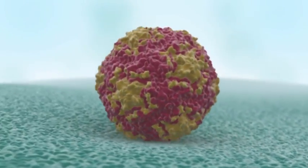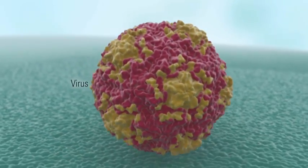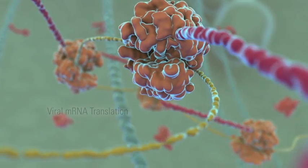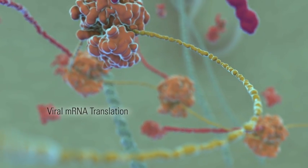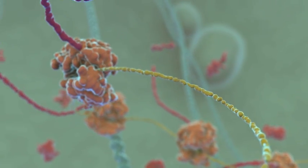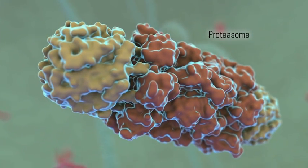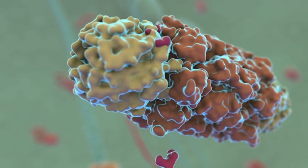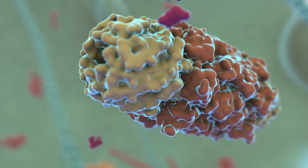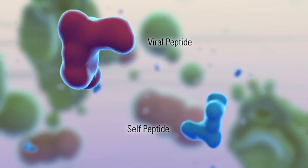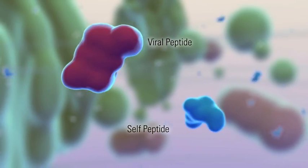Following infection, a virus takes advantage of the host cellular machinery to create proteins required for its propagation. Within the cytosol, host enzymes like the proteasome break down some of these viral proteins. The resulting viral peptide fragments join self peptides generated from the turnover of normal cellular proteins.